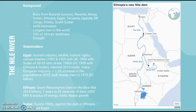The Nile runs from Burundi, which is its source, through Rwanda, Kenya, Sudan, Ethiopia, Egypt, Tanzania, Uganda, the Democratic Republic of Congo, Eritrea, and South Sudan — not in that order obviously from this map. It is 6,650 kilometers long, the longest river in the world, covering 10% of Africa's land mass, and it is also prone to drought.